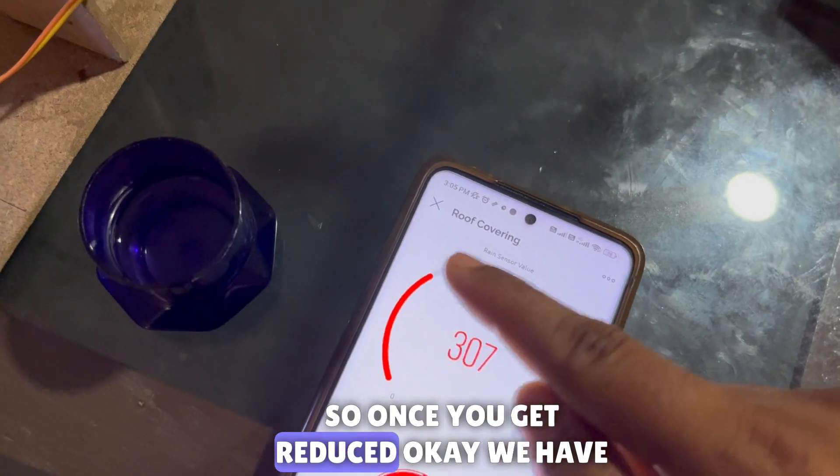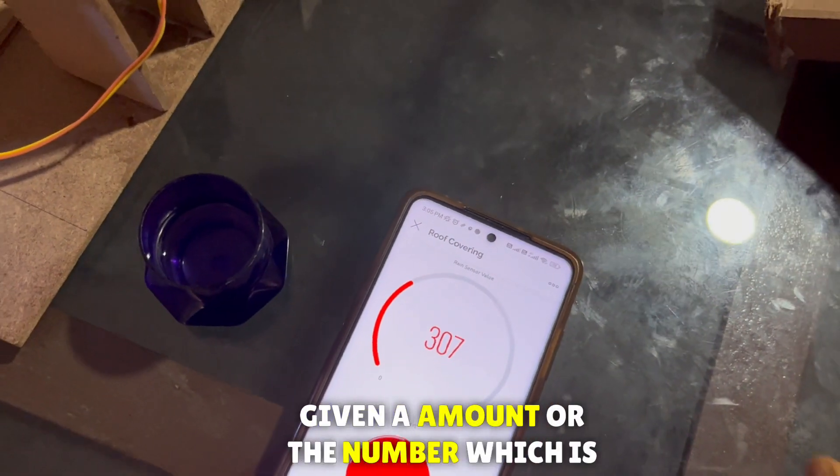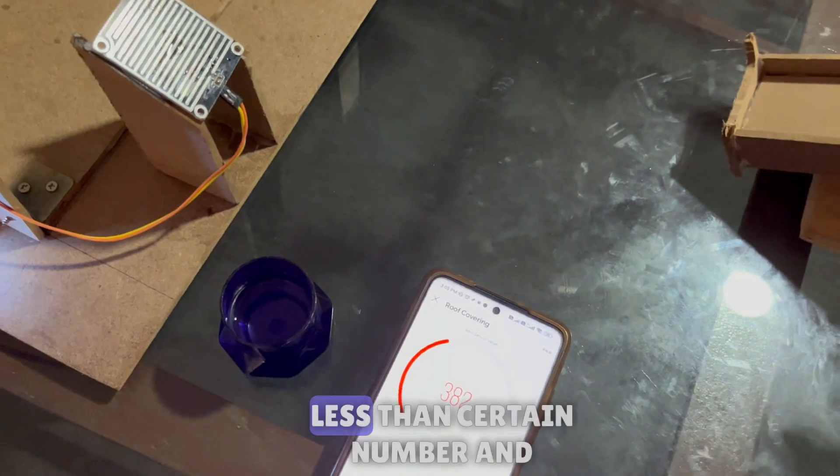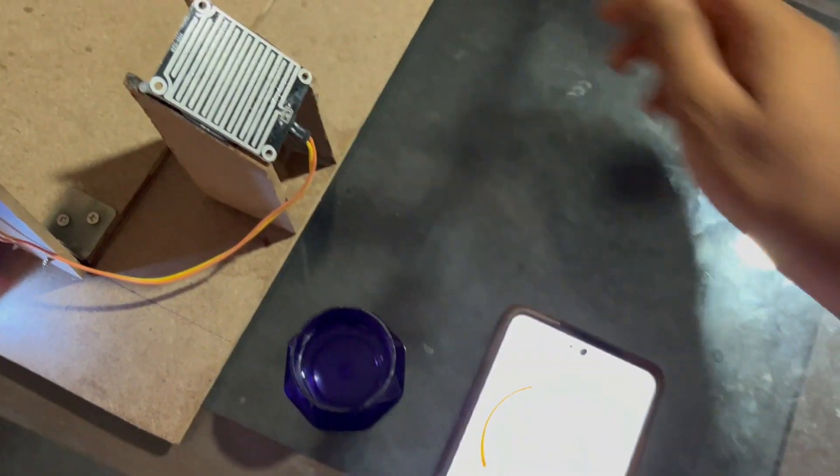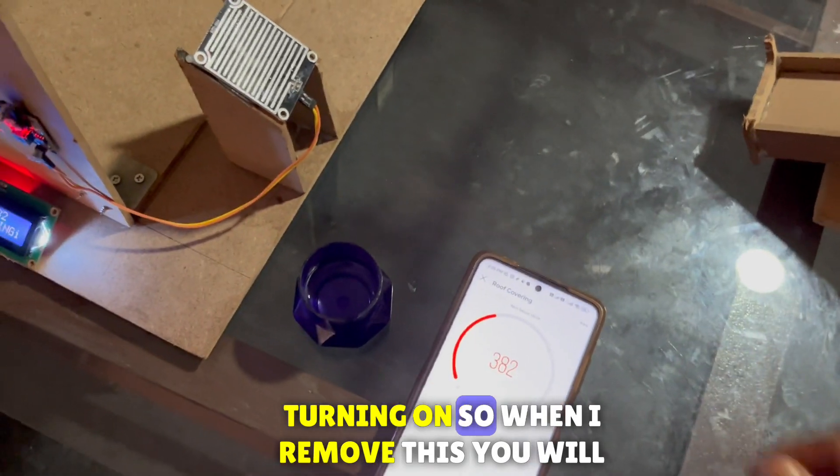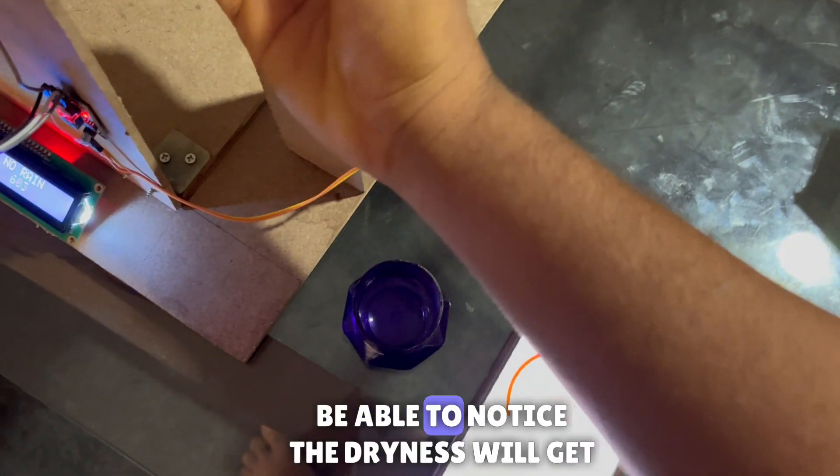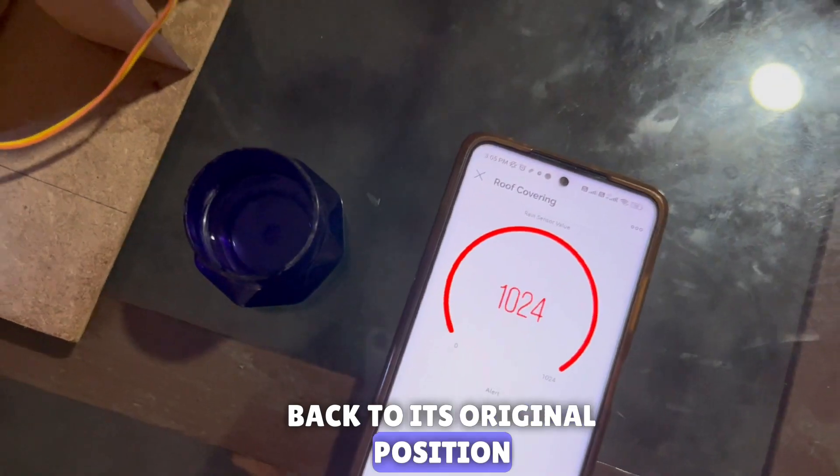So once it gets reduced, we have given a threshold number and automatically it is going to be turning on. So when I remove this, you will be able to notice the dryness will get back to its original position.